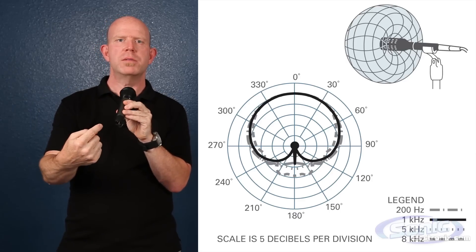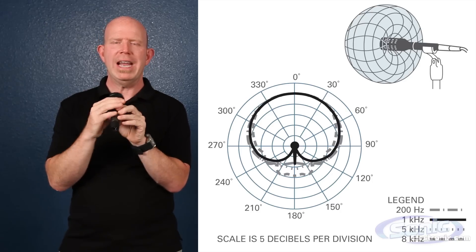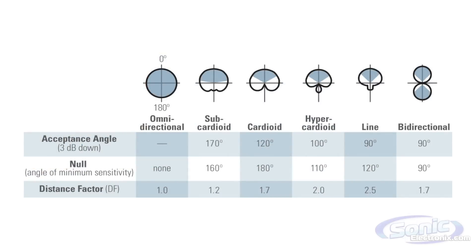The strongest rejection of this mic, or the null point, is from the rear, 180 degrees off the front of the microphone. Another term associated with unidirectional microphones is called the acceptance angle. This refers to the angle that the mic will pick up best. Cardioid mics for example have an acceptance angle of about 120 degrees.